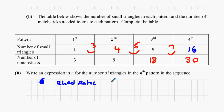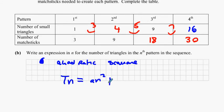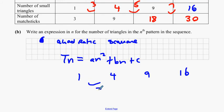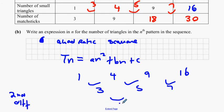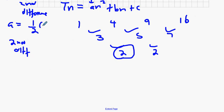A quadratic sequence: Tn equals an squared plus bn plus c. Our triangle sequence is one, four, nine, sixteen. The first difference is three, five, and seven. The second difference is two. Your a value equals half the second difference.